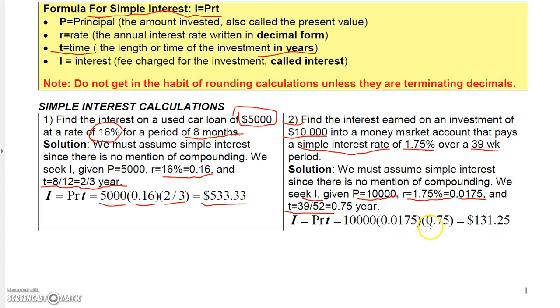But since 39 over 52 is exactly 0.75, I can go ahead and put 0.75 in this spot here. So you take 10,000 times 0.0175 times 0.75. That's your principal times rate times time. And you get that the interest on this money market account is $131.25.